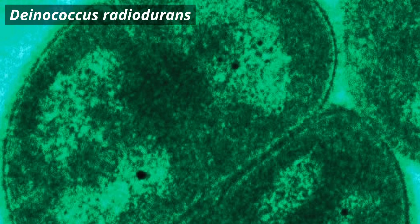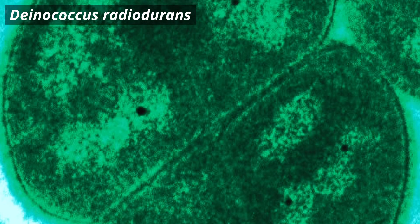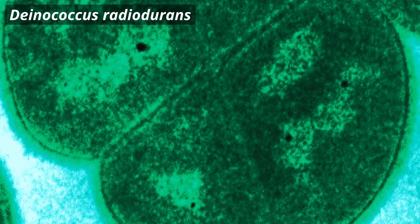So it was first discovered in 1956. Basically, they were testing canned meat, and they were exposing the meat to gamma radiation in order to sterilize it. So instead of heating it up, you radiate the cans. And the cans were basically expected to be free of microbes, but this bacterium was able to grow anyway.